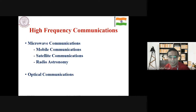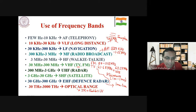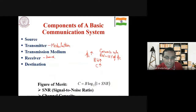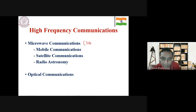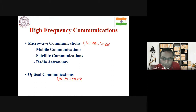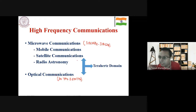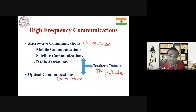Marconi, on the other hand, demonstrated wireless communication over a larger distance — for transatlantic communication between England and Newfoundland. In 1897 Bose demonstrated his research, and exactly 100 years later, in 1997, a paper titled 'The Work of Jagadish Chandra Bose and 100 Years of Millimeter Wave Research' was presented at a prestigious conference. The abstract states: 'Just 100 years ago, Bose described to the Royal Institution in London his research carried out in Calcutta at millimeter wavelengths.'